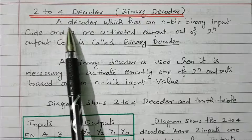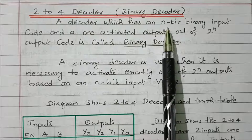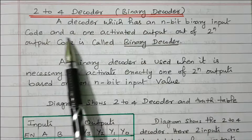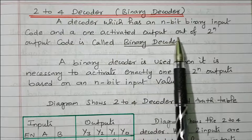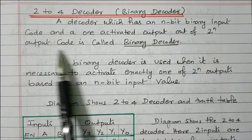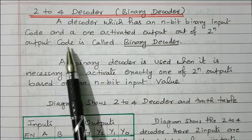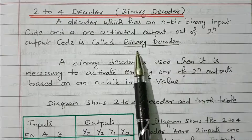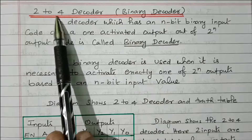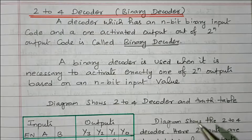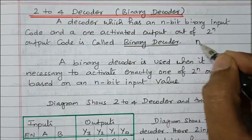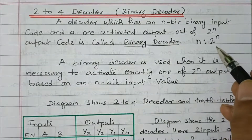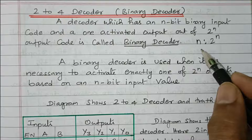What is a decoder? A decoder has n-bit binary inputs and one activated output of 2 to the power n possible output codes. Because of this n input and 2 to the power n output, it is also called a binary decoder. So we have n inputs and 2 to the power n outputs — that is the basic function of the decoder.